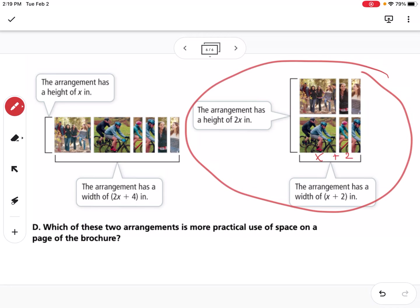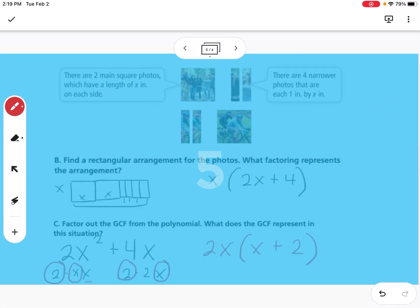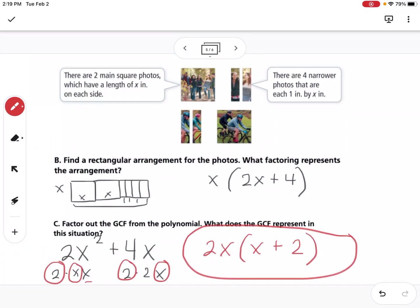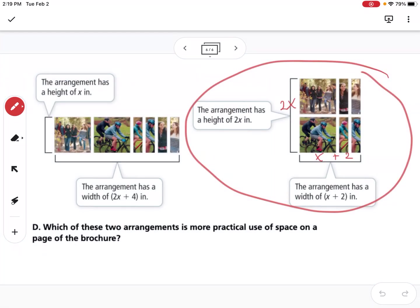So x plus 2 and has the width of 2x. So that goes back to our GCF. So 2x times x plus 2, that would make more sense to use our GCF factorization for the arrangement of the pictures on the page.